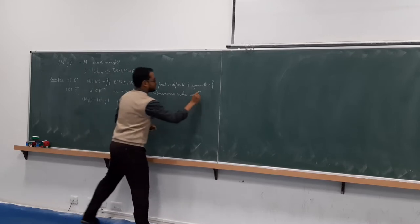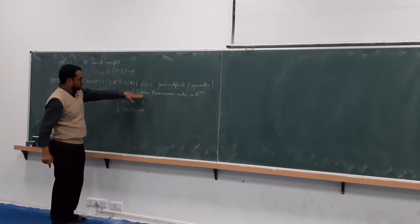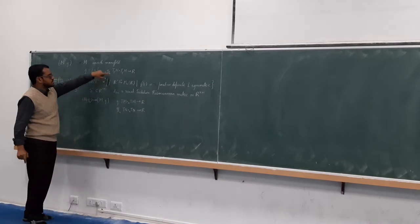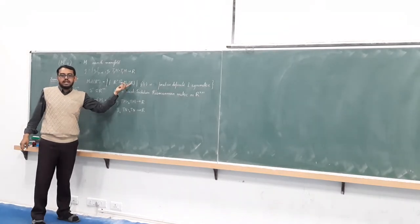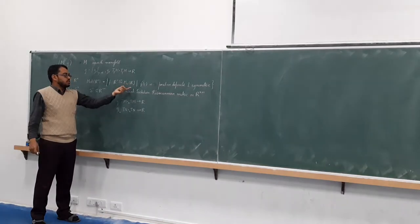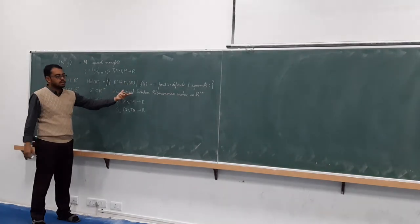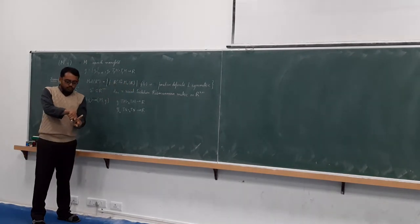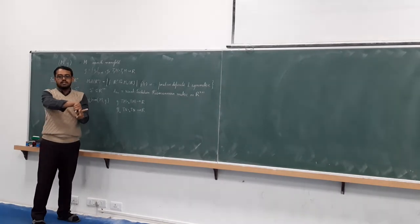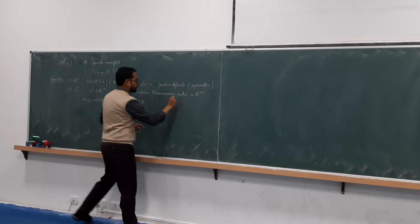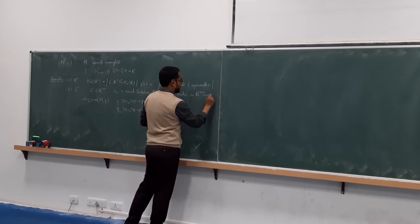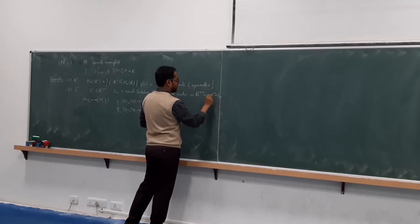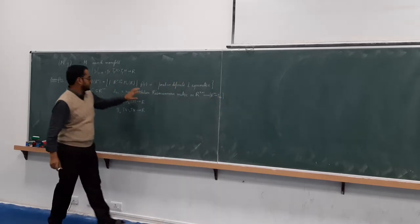What is the usual Euclidean Riemannian metric? For every point in Rⁿ, you assign a positive definite symmetric matrix — and you are going to assign the identity matrix. That is exactly what the Euclidean metric does: given a point, if you take two vectors at that point, the inner product is the standard inner product. The Euclidean metric corresponds to the map sending every point of Rⁿ to the identity matrix.